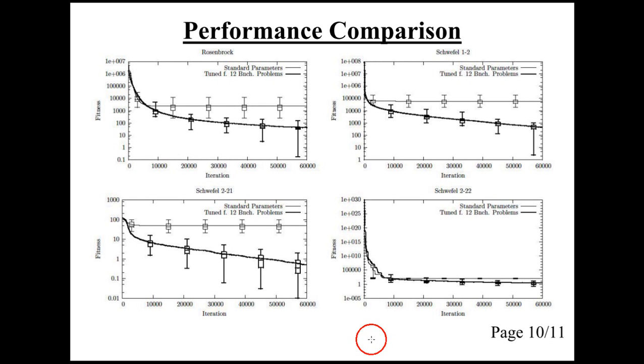Now compare the performance of these parameters. The bold lines are the average fitness or performance obtained with the meta-optimized parameters, and the narrow lines are for the hand-tuned parameters. And this is the Rosenbrock problem and these are Schwefel problems. And in all cases, the performance greatly increases from using meta-optimized parameters.